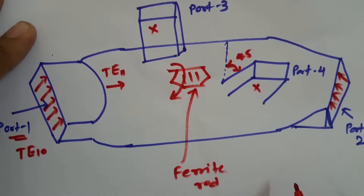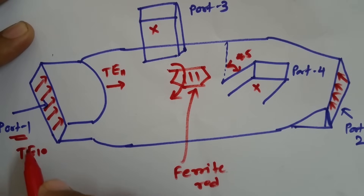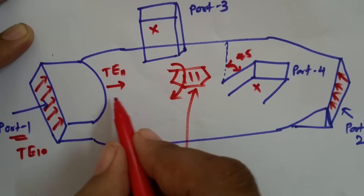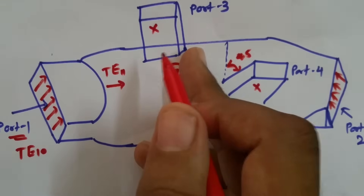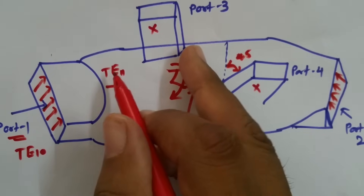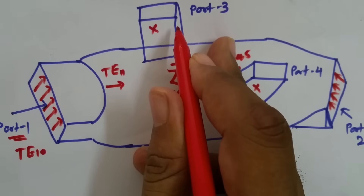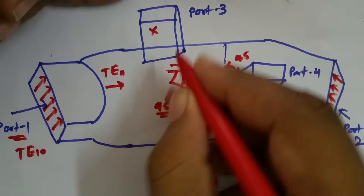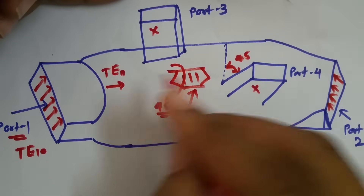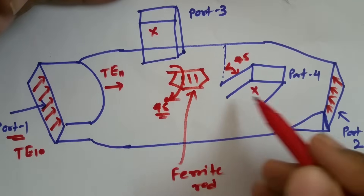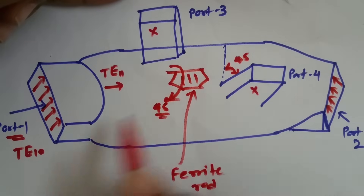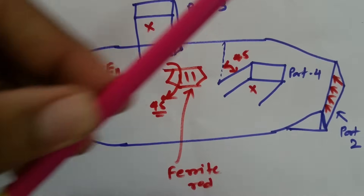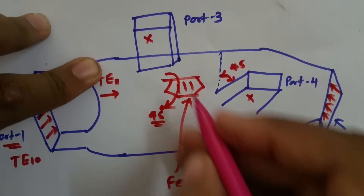Progressing further, we will observe output at port 2, which will be similar to the input inserted at port 1. Whatever input we insert at port 1 in the rectangular waveguide is there with TE10 mode. Once it passes through the rectangular to circular waveguide transition, that signal is translated into TE11 mode, and its orientation is perpendicular to port 3 — so output at port 3 will be zero. The ferrite rod circulates the signal by 45 degrees clockwise, so port 4 is out of phase, and the signal at port 2 is exactly in phase with port 1, so we get output at port 2.